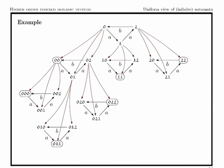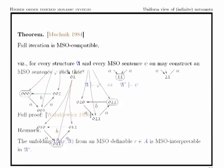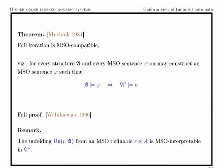We iterate this construction again and again, infinitely many times. In the basic iteration the only difference is that we don't have the clone predicate, so it disappears. The construction is very interesting because it preserves the decidability of the monadic second-order theory.